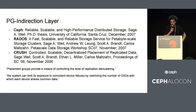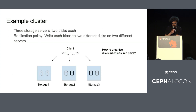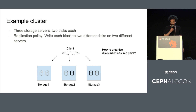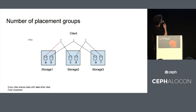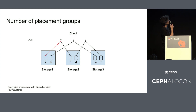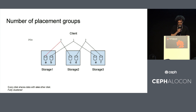The PG indirection layer addresses exactly that problem, and it's introduced in those famous Ceph-related papers. I want to illustrate it on a small example cluster consisting of just three machines, each having two disks, with the replication policy being to put each block of data on two different disks on two different machines. The question arises: how to organize the disks into pairs? The simplest would be to just group each two disks into a pair, and then the client can write into such a pair.